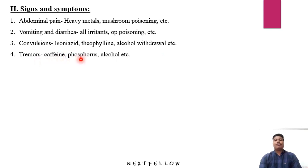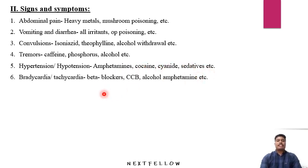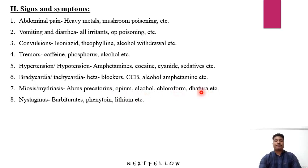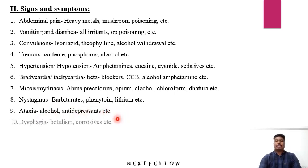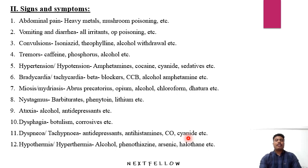The fifth symptom is hypertension or hypotension, seen with amphetamines, cocaine, cyanide, and sedatives. The sixth is bradycardia or tachycardia, seen with beta blockers, calcium channel blockers, alcohol, and amphetamines. Ocular changes like miosis and mydriasis are seen with opiates, alcohol, chloroform, and datura. Nystagmus is seen in barbiturate, phenytoin, and lithium poisoning. Ataxia is seen in alcohol and antidepressants. Dysphagia is seen in botulism and corrosives.